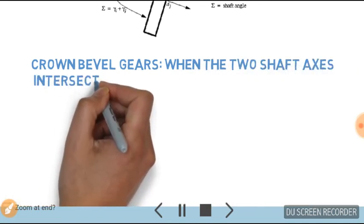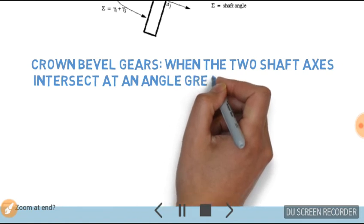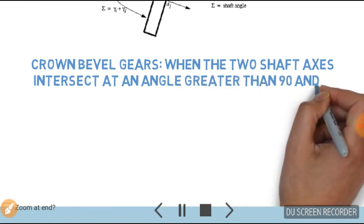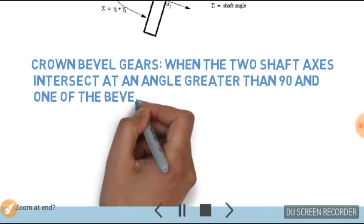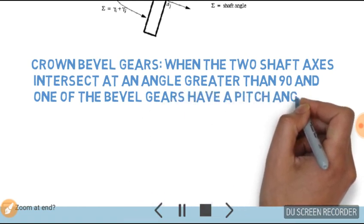And one of the bevel gears has a pitch angle of 90 degrees, they are known as crown bevel gears.